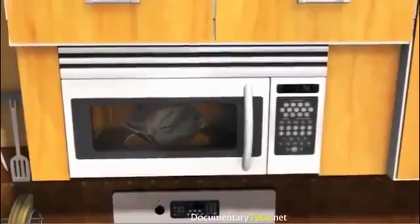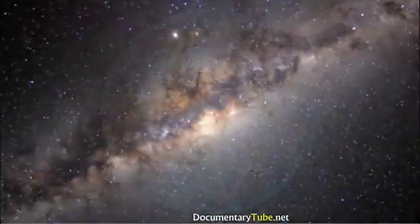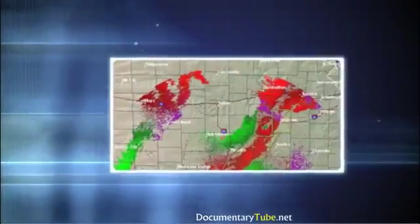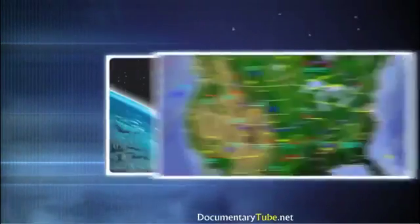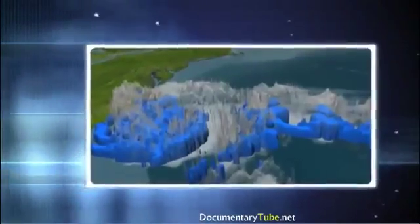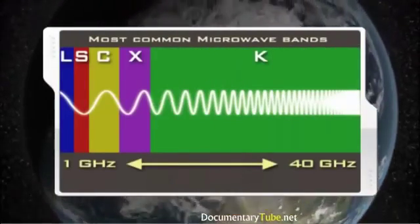Microwaves can pop your popcorn, catch you speeding, and carry thousands of phone channels. With wavelengths ranging from 30 centimeters down to one millimeter, microwaves fall between radio waves and infrared. Microwaves are used in Doppler radar, widely used for short-term localized weather forecasting. Satellites have revolutionized weather forecasting by providing a global view of weather patterns and surface temperatures, greatly increasing the accuracy of tropical storm and climate forecasts. Different wavelengths of microwaves grouped into bands provide different information to scientists.